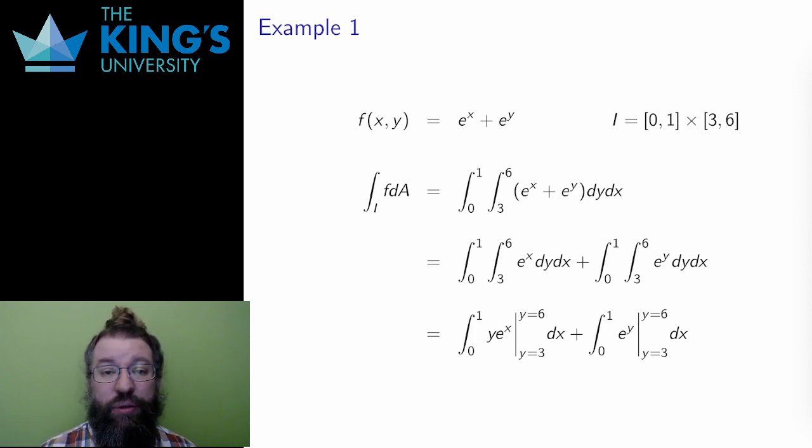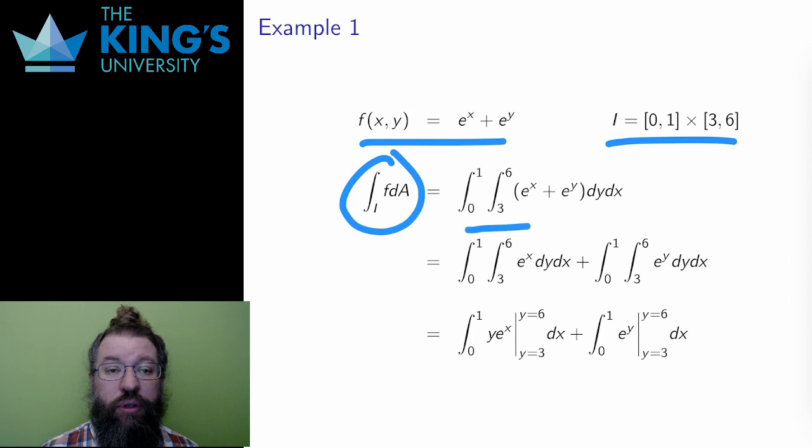Here is a scalar field in two variables and an interval. What is the volume under the graph of this function over this interval in the xy plane? I set up the iterated integral. I can choose the order of the variables, so I'll put x outside and y inside.